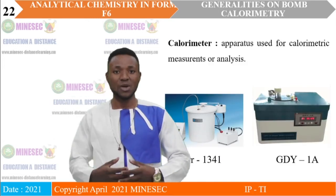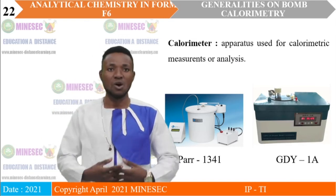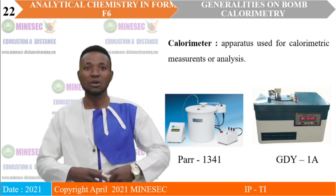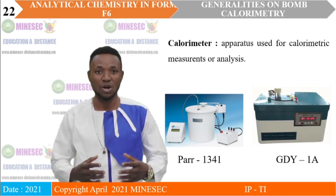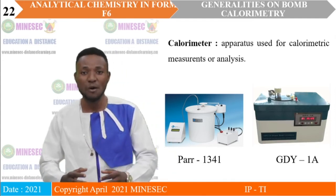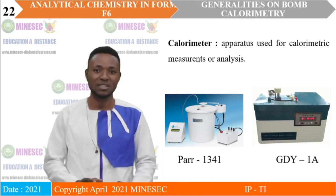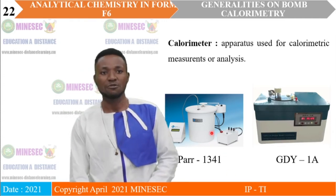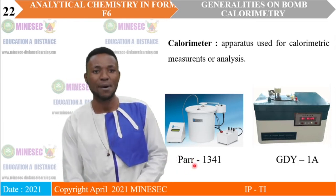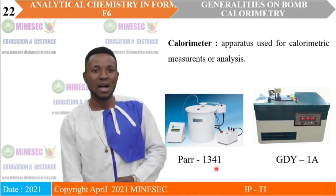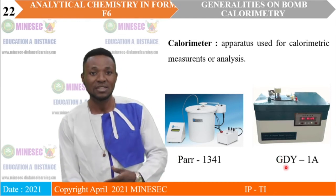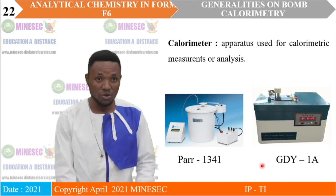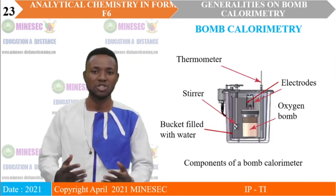A calorimeter is an apparatus used for calorimetric analysis. Some examples include the Parr 1341 calorimeter and the GDYIA calorimeter. We should also note that there are two main types of calorimetry: bomb calorimetry and microcalorimetry. We are going to focus on bomb calorimetry in this lesson.